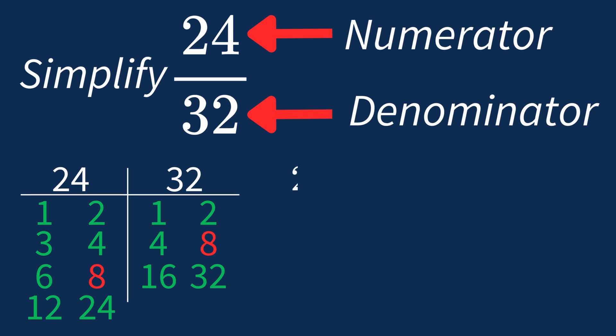Dividing the numerator, 24 by 8, gives us 3. Dividing the denominator, 32 by 8, gives us 4.